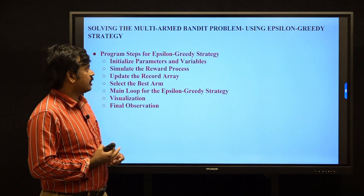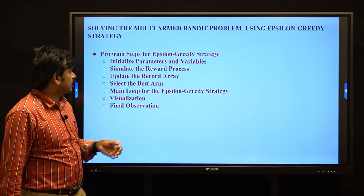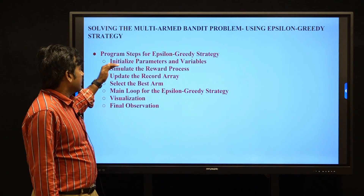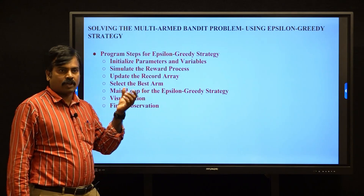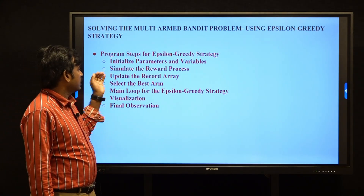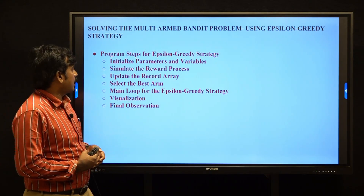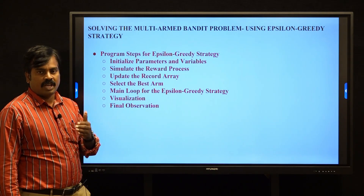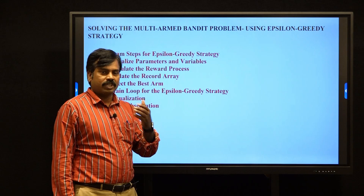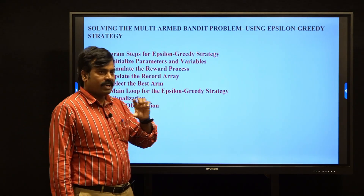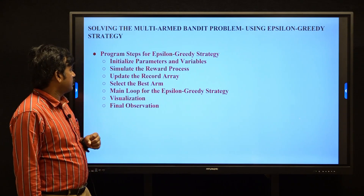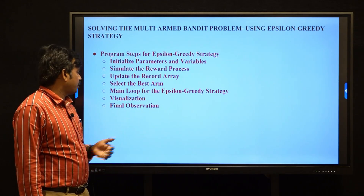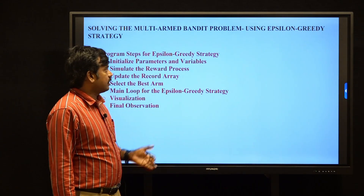How to implement the epsilon greedy strategy to solve the multi-arm bandit problem using the following steps: first, initialize the parameters and variables required for the program. Next, simulate the reward process — we simulate the environment, assuming n number of arms and giving simulated rewards for each. Then update the record array, which maintains rewards and arm counts. Then select the best arm and run the main loop for the epsilon greedy strategy. The final step is visualization of results and final observations.